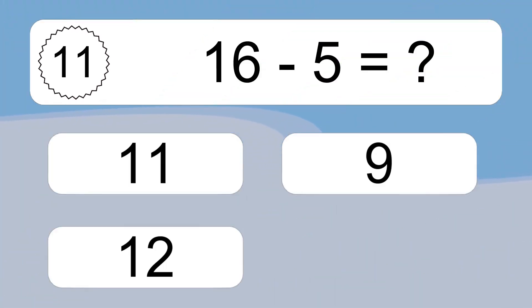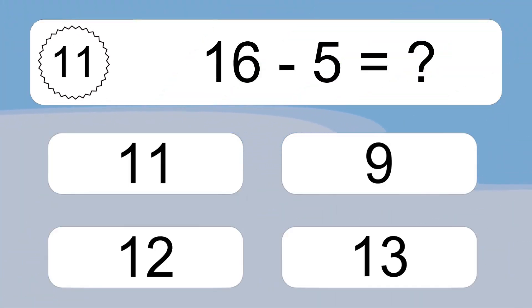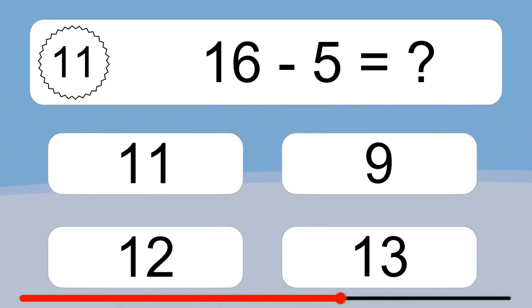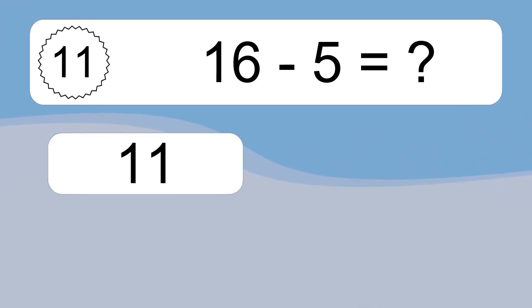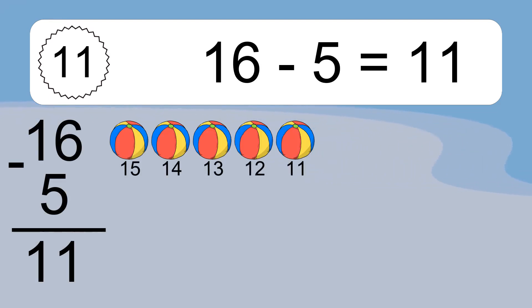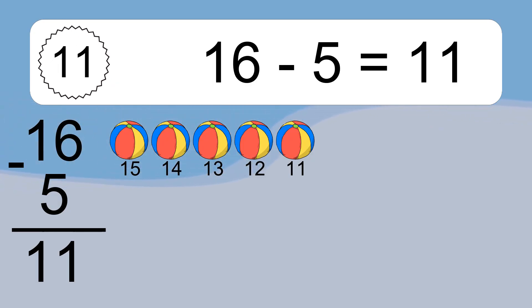16 minus 5 equals what? 16 minus 5 equals 11. Let's count it: 15, 14, 13, 12, 11.